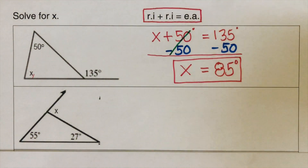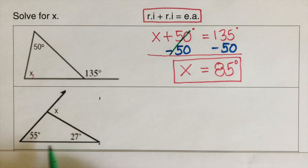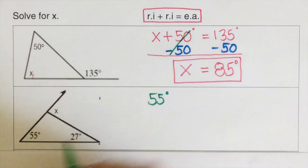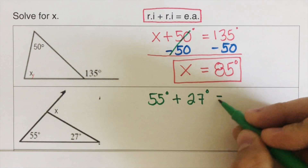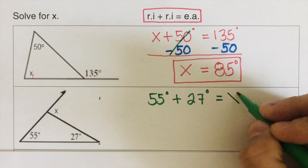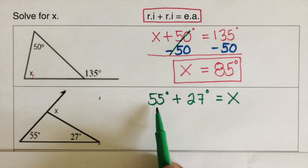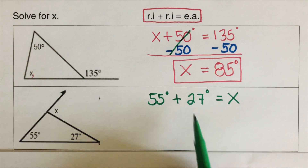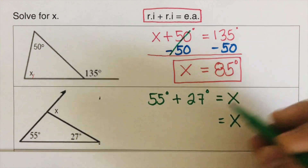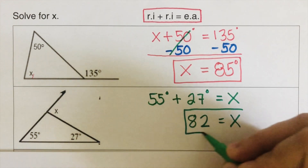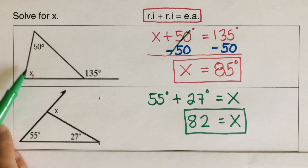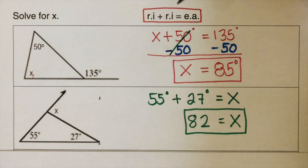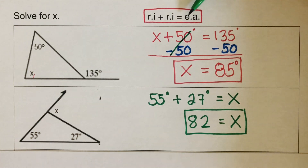Now the second problem. The two remote interior angles are 55 degrees and 27 degrees, and x is the exterior angle. So 55 degrees plus 27 degrees equals x. We just add 55 and 27, which gives us 82. So x equals 82 degrees. The measure of each remote interior angle added together equals the measure of the exterior angle.